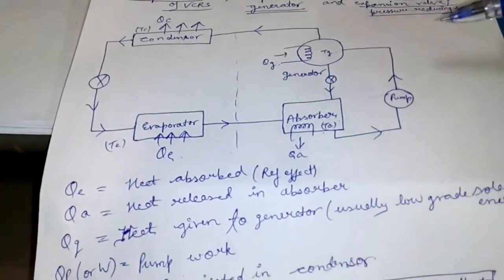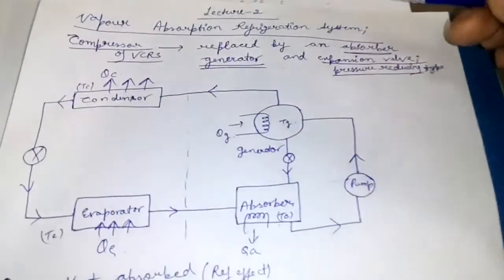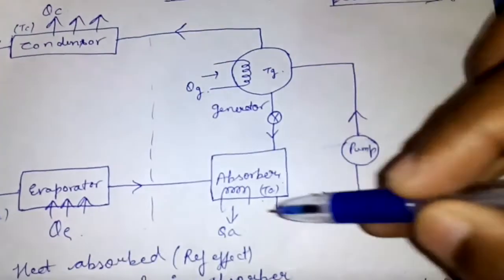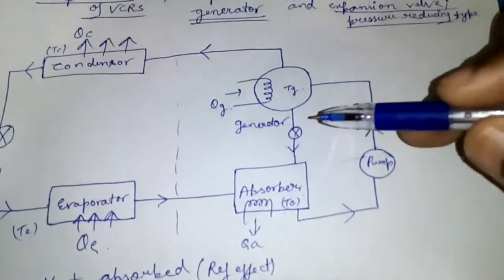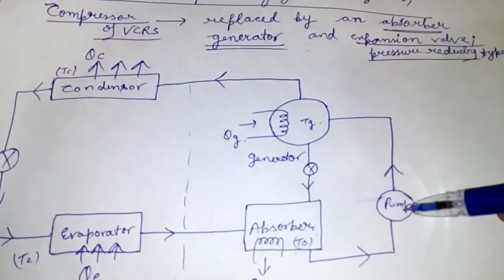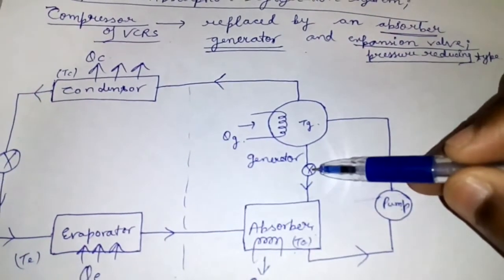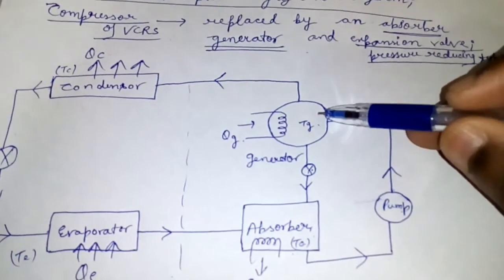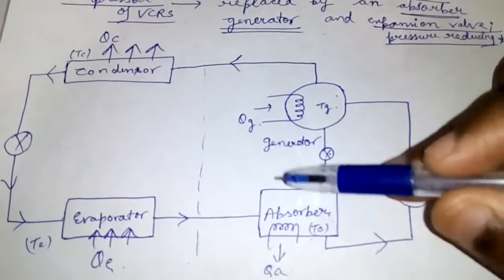The compressor of VCRS is completely replaced by this circuit, in which this is absorber, pump, pressure reducing type expansion valve, and generator.